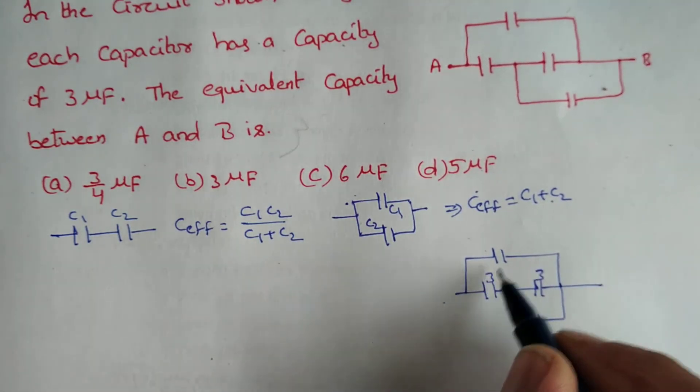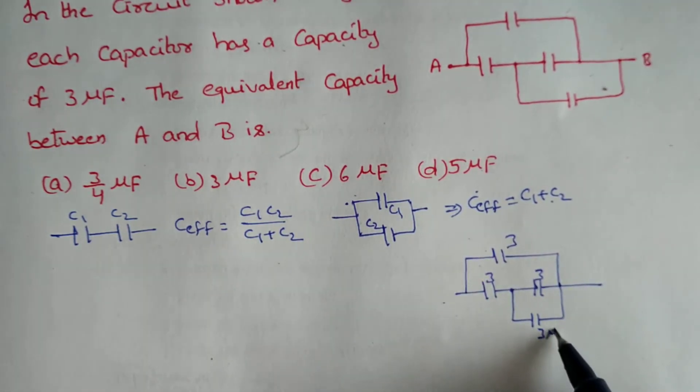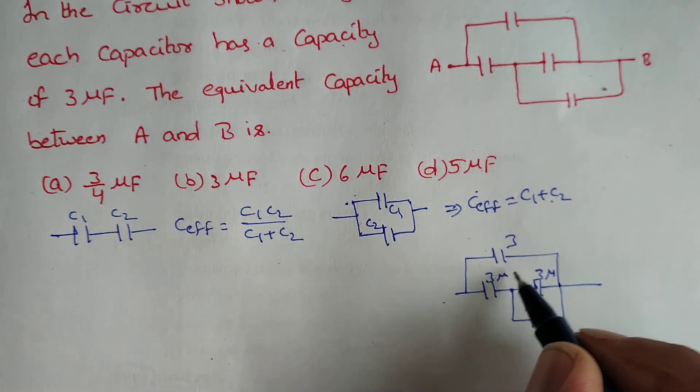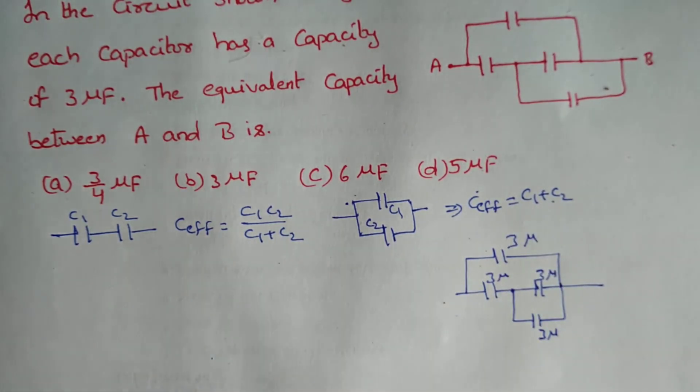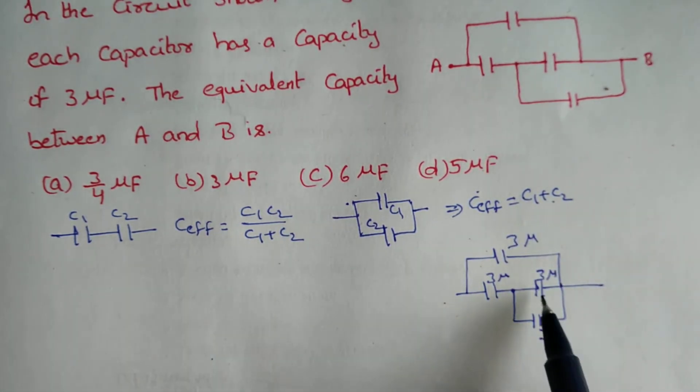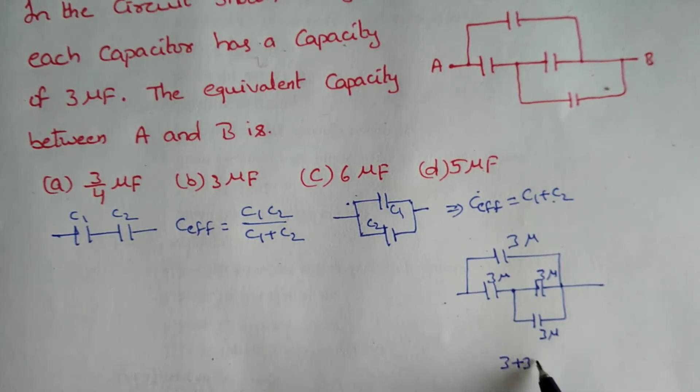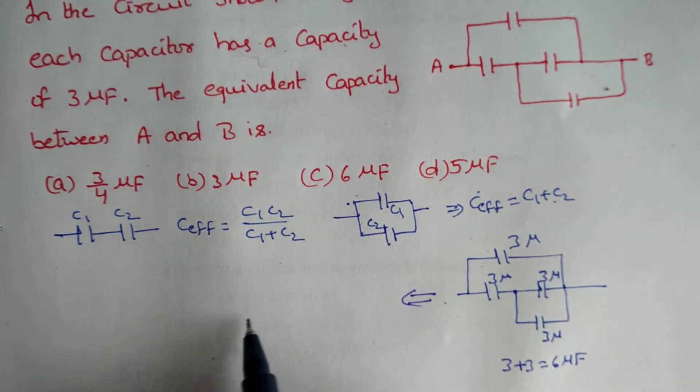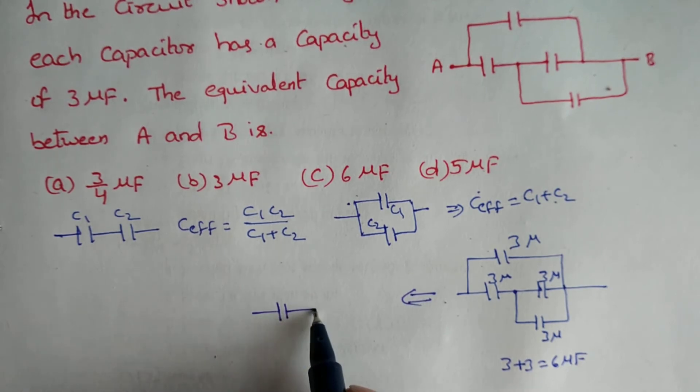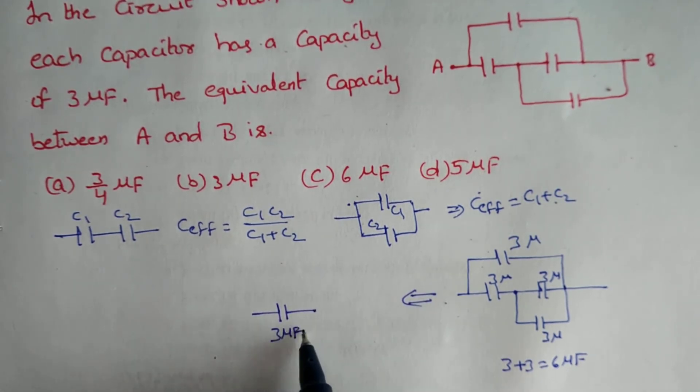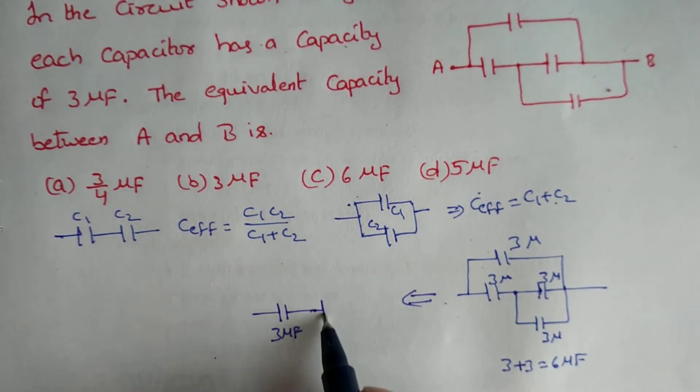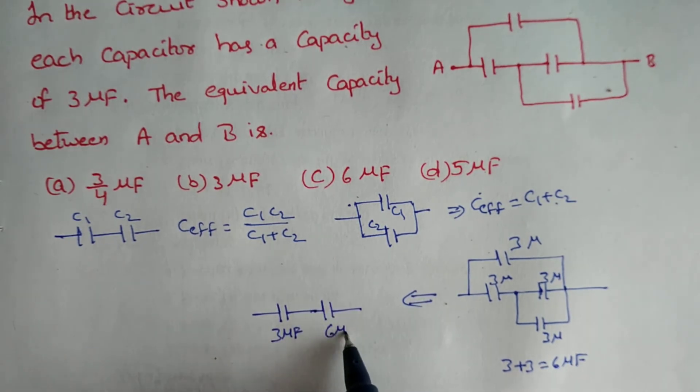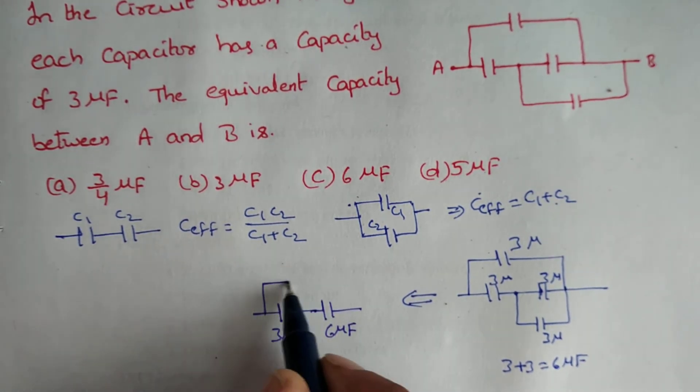Now each one having the 3 microfarad they have given. 3 microfarad. I have already said that two capacitors are in parallel then what we have to do, just we have to add 3 plus 3 that is equal to 6 microfarad. And I am making like this. One is 3 microfarad and this two after adding we can get as 6 microfarad.